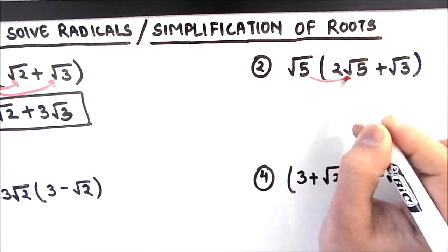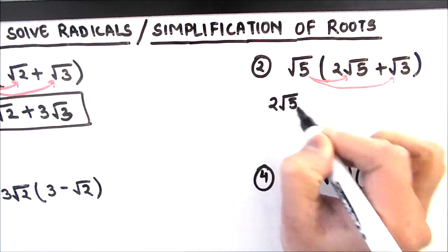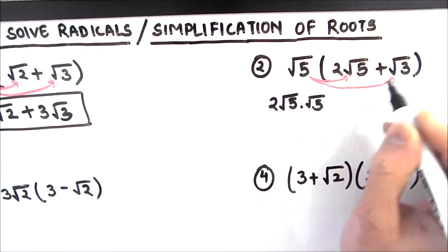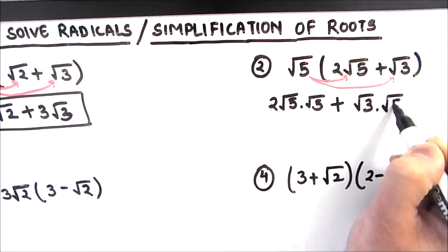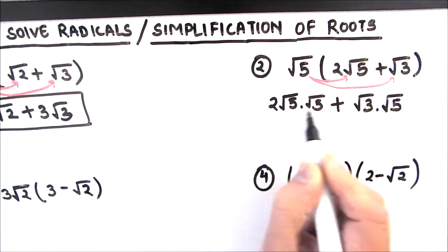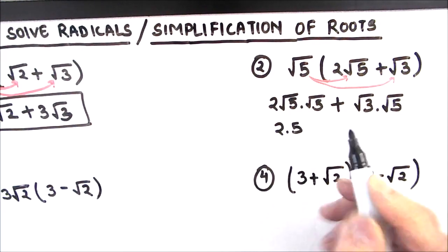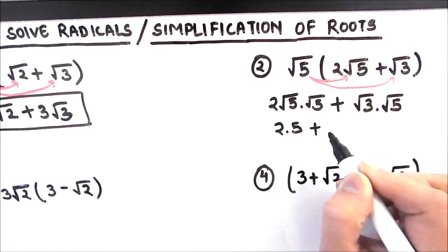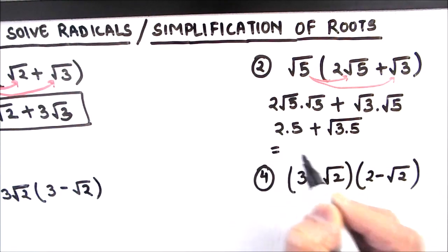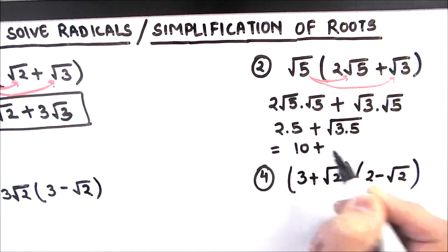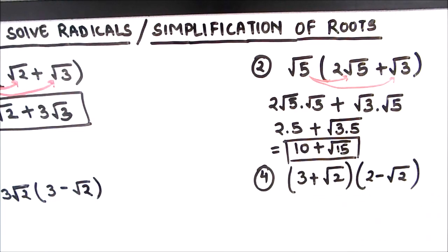The next example is root 5 times the quantity 2 root 5 plus root 3. We multiply root 5 by the first number: root 5 times 2 root 5 gives 2 times 5, which is 10. Then root 5 times root 3 gives root 15. So the final answer is 10 plus root 15.